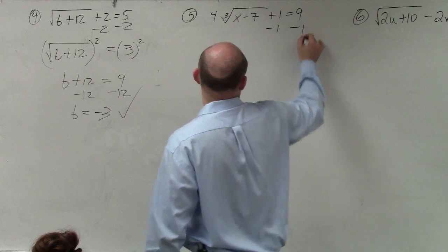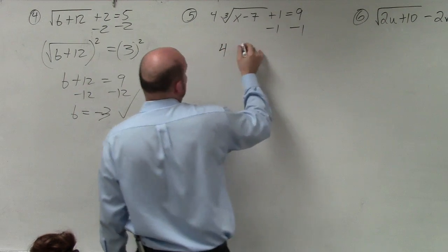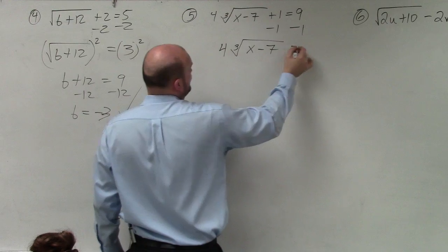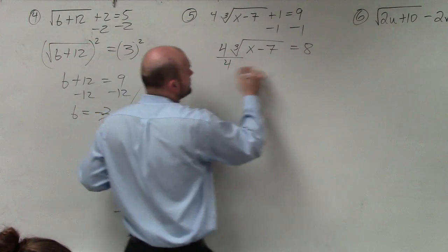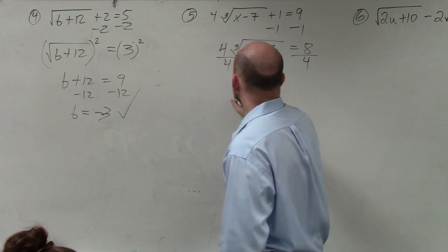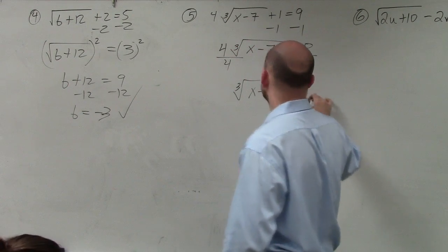So in this case, I'm going to subtract 1, subtract 1. I have 4 times the cube root of x minus 7 equals 8. Now I'll divide by 4. Cube root of x minus 7 equals 2.